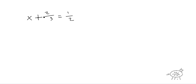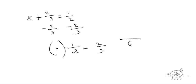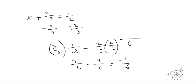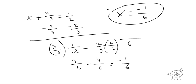Let's try a problem with a nastier fraction: x plus 2 thirds equals 1 half. You've got to subtract 2 thirds from both sides, but you can't just subtract because the denominators differ. So it becomes 1 half minus 2 thirds, and we need a common denominator of 6. Multiply the first by 3 over 3 and the second by 2 over 2, giving 3 over 6 minus 4 over 6, which equals negative 1 over 6. So x equals negative 1 over 6.